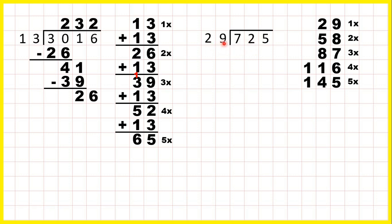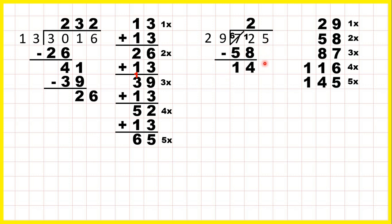Taking the first two digits together, we have 72 divided by 29. The closest number to 72 that's still less than 72 is 58, so we write 58 underneath. And because that's 2 times, we write 2 in our answer line. Now we have 72 minus 58. Using the column method: we can't do 2 minus 8, so we go to the left, borrow one — 12 minus 8 is 4, 6 minus 5 is 1.